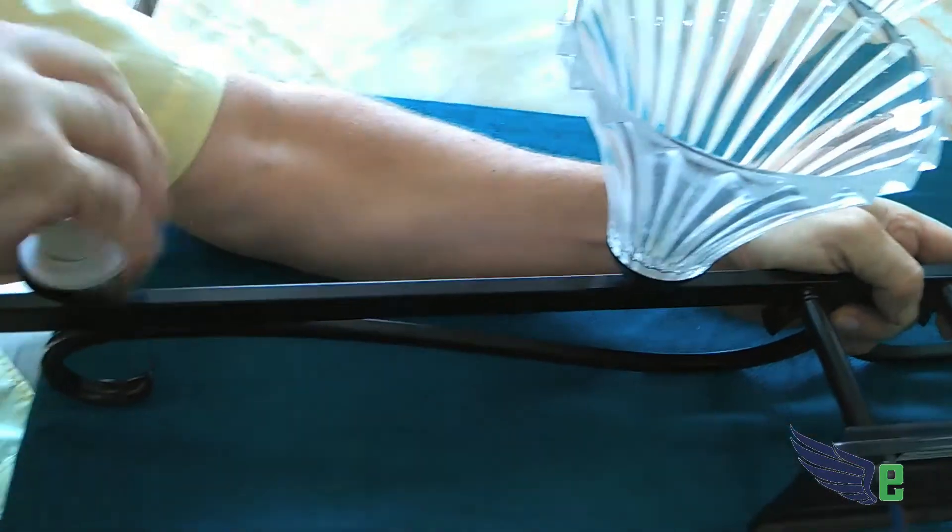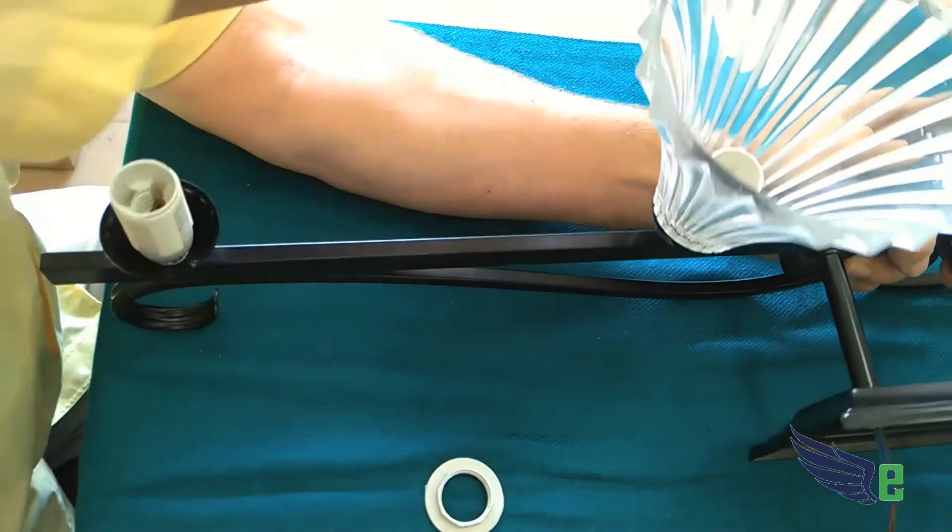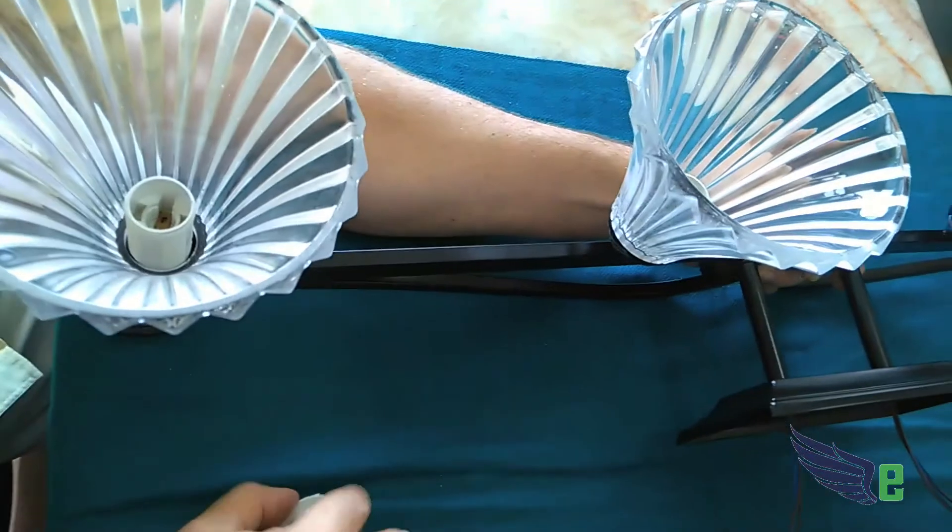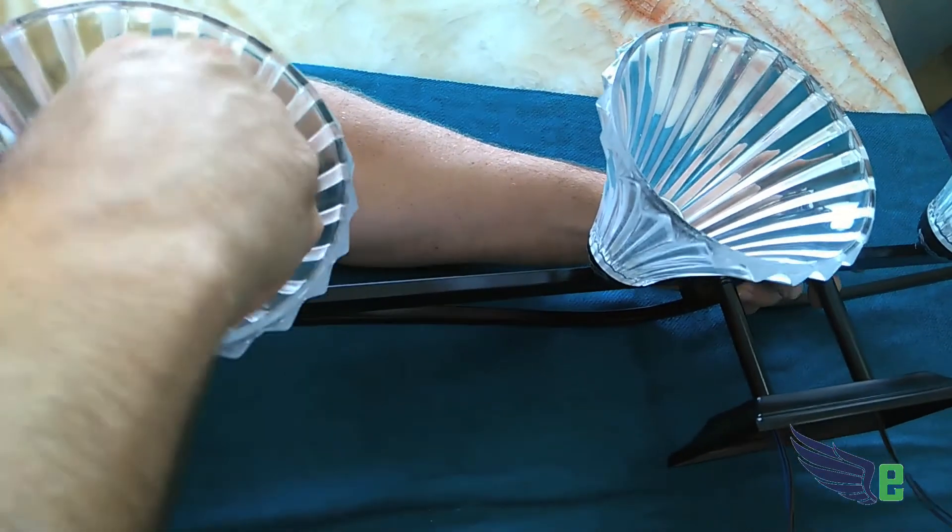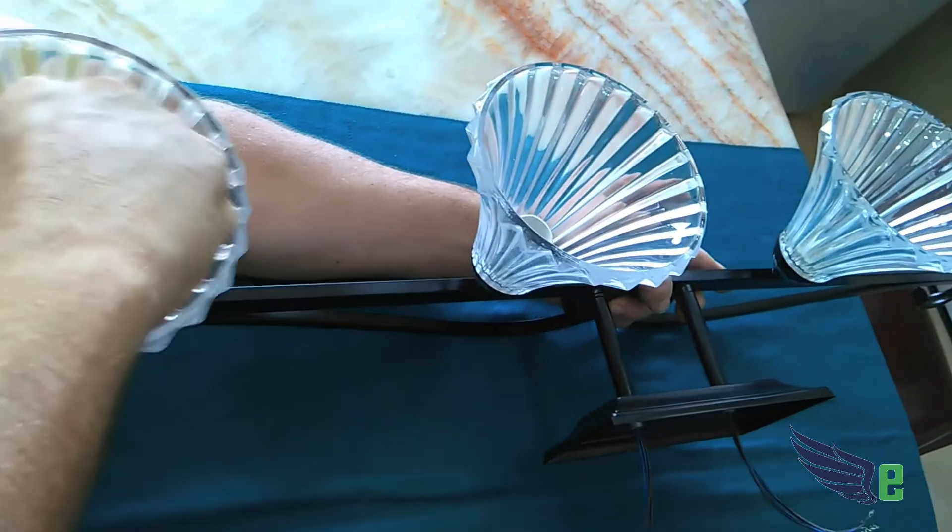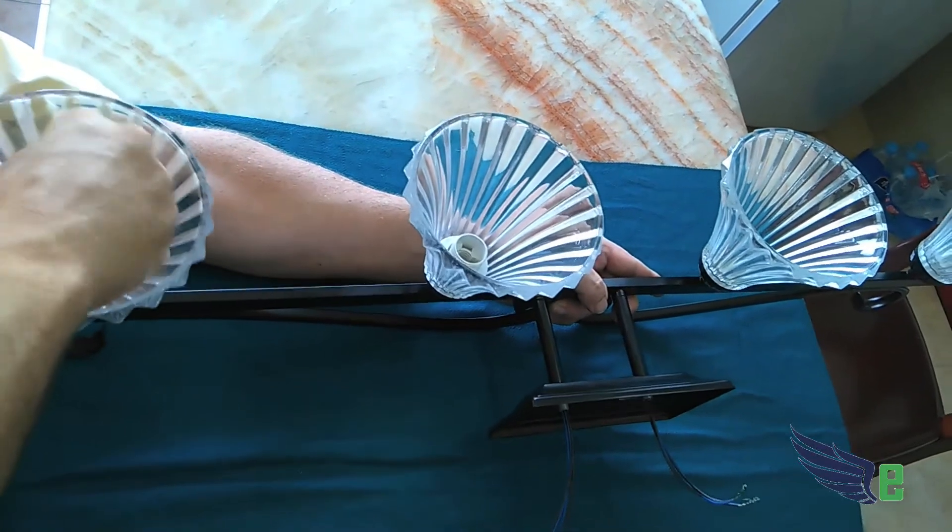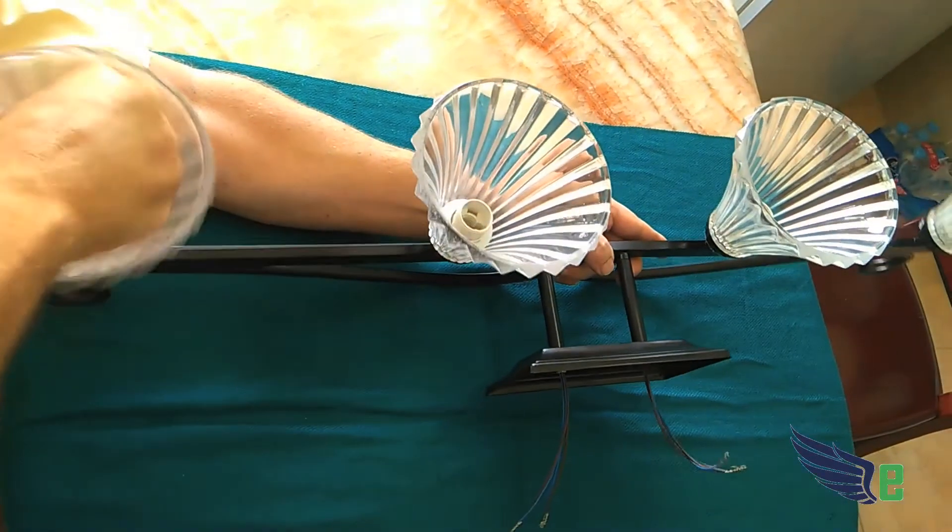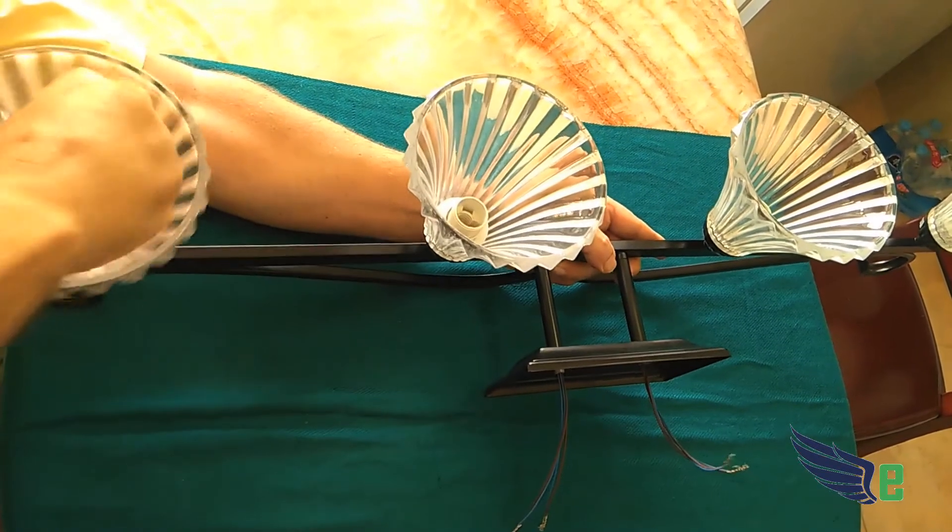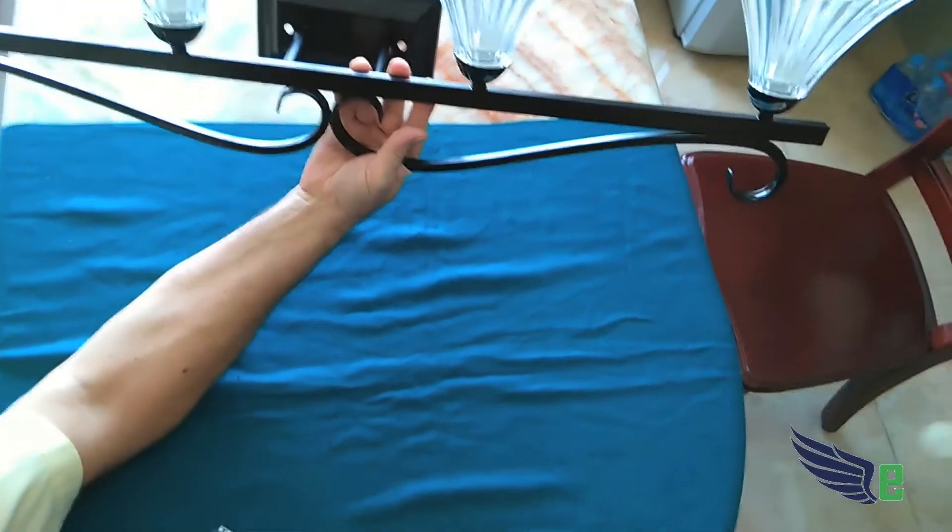And now the last one. And there you have it, perfect wall mount for a mirror, bathroom vanity, about 15 minutes total time to put together.